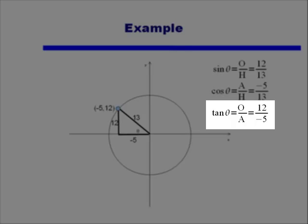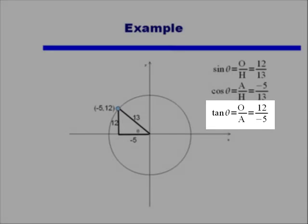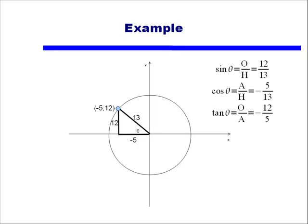Finally the tangent of the angle theta, is opposite over adjacent, or 12 divided by negative 5. Here I've rewritten cosine and tangent as negative 5 over 13, and negative 12 over 5, instead of leaving the negation sign in either the numerator or the denominator.